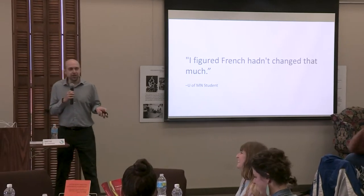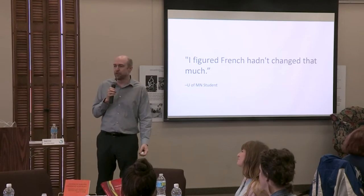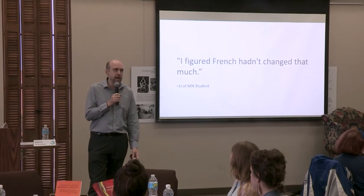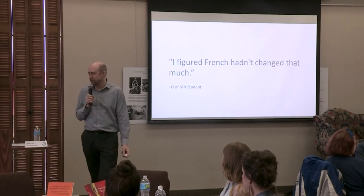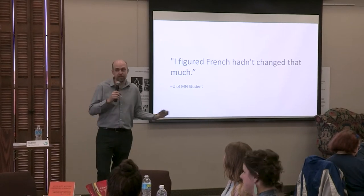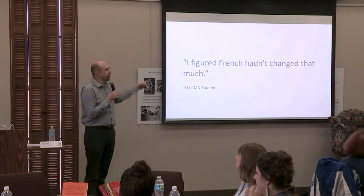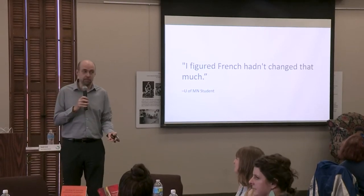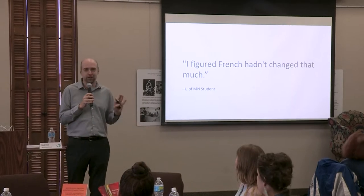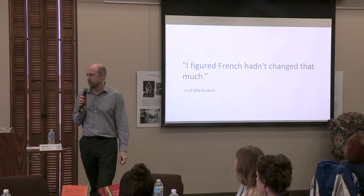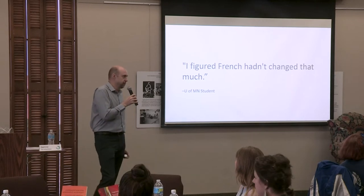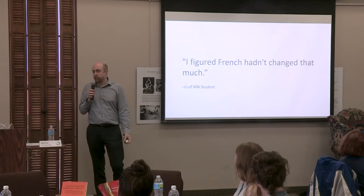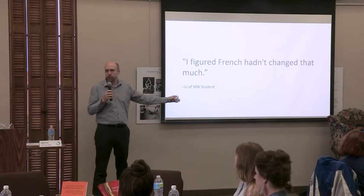Buying an older edition: a student told me he was asked to buy an $80 French textbook, found one two editions older on Amazon for eight bucks, and that's what he could afford so he bought it. His rationalization was pretty good actually — though in the next breath he said he understood he was taking an academic risk, because the readings are different. He was willing to take that risk because that's what he could afford.